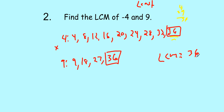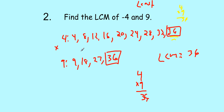I caution you on just taking the first number and multiplying by the second number to get 36. It works sometimes but not all the time. It will give you a common multiple, but it won't always give you the least common multiple.